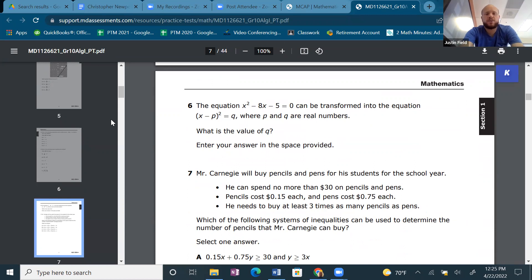The equation x² - 8x - 5 can be transformed into the equation (x - p)² = q, where p and q are real numbers. So real numbers are the irrational and the rational put together. Anything except imaginary and complex, which we don't talk about in Algebra 1. We don't talk about the square root of negative numbers. Okay, what is the value of q? Don't they want to know the value of p?